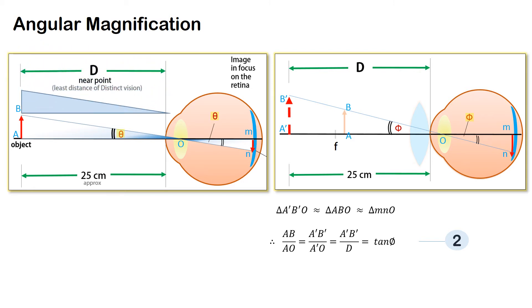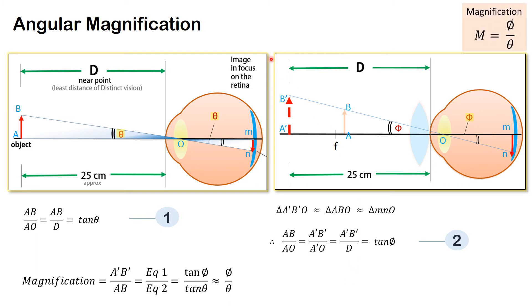Similarly on the left hand side we can write ab by d is equal to tan theta. So we can find magnification as a dash b dash, which is what the eye sees, upon ab, which is tan phi by tan theta. For small values of phi and theta we can approximate it to phi by theta. This is an important concept and an important formula which we will use often.